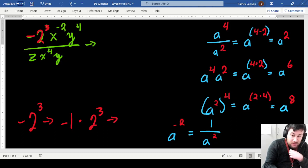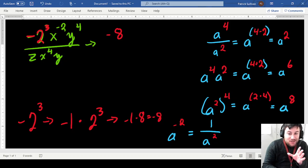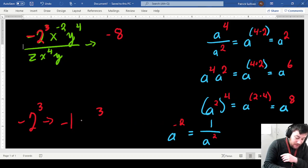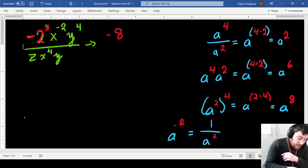Which in that case, 2 to the third is 8, and negative 1 times 8 is equal to negative 8. So that's going to be in my numerator up here. So again, it's only when the exponent is negative that you put it on the opposite side of the fraction bar.